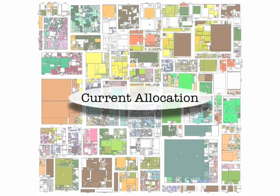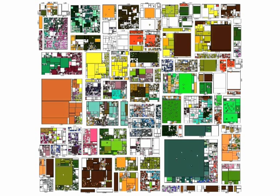Starting from the current allocation at the center, we can see how this process works. Note that overall the current allocation looks reasonable. People are generally near others from their organization and near their technical areas, but we can see some fragmentation and inefficient use of space, so there are definite areas where we can make some progress.